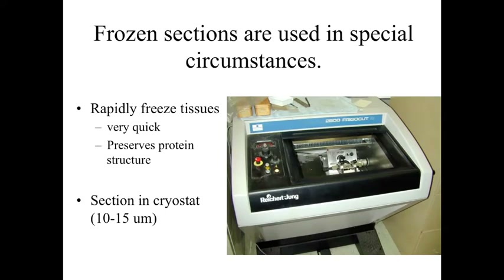We can also use frozen sections. We talked about preserving tissues by freezing in liquid nitrogen — you freeze it very rapidly, it's a quick process, and it allows you to preserve protein structure. We can cut frozen tissue with a cryostat, which is essentially a microtome — one of these deli slicers for cutting biological tissues — but within a refrigeration system. This allows us to section and collect and preserve tissues for study.